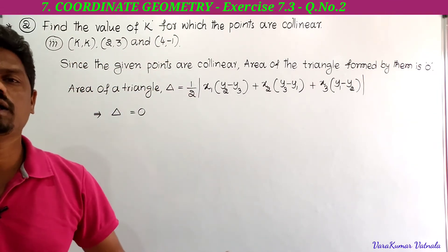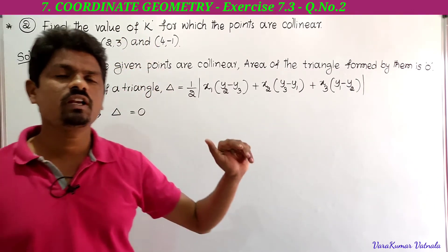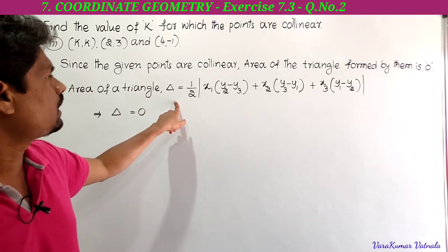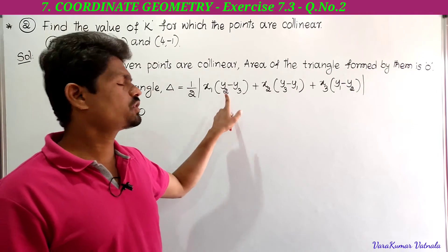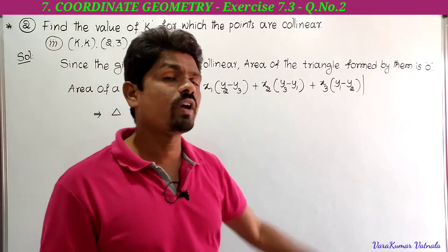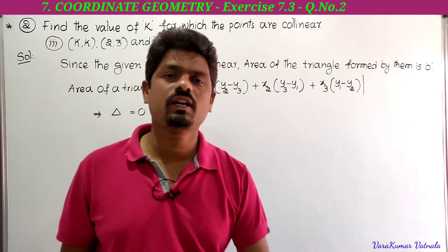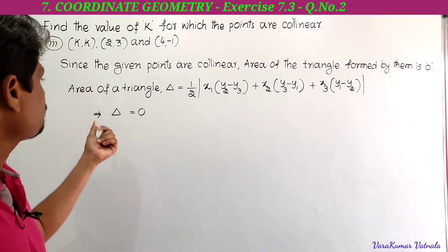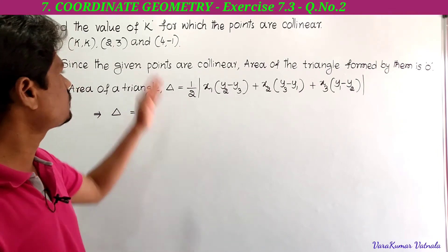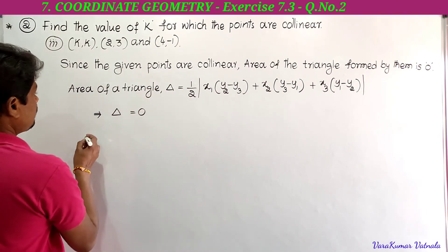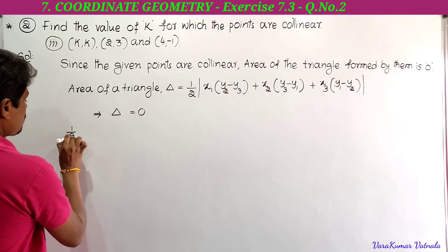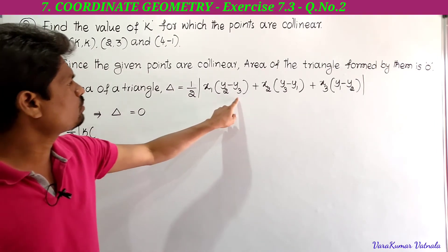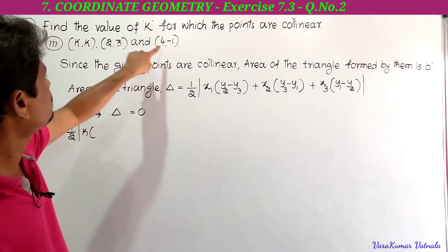The area of triangle delta equals half into modulus of x1(y2 - y3) + x2(y3 - y1) + x3(y1 - y2). Delta equals 0 since the given points are collinear. We substitute: 1/2 into modulus of x1, which is k, into (y2 - y3).